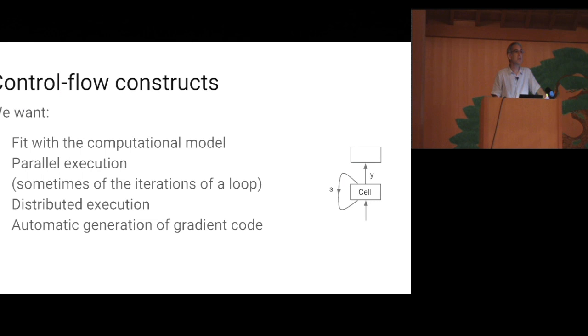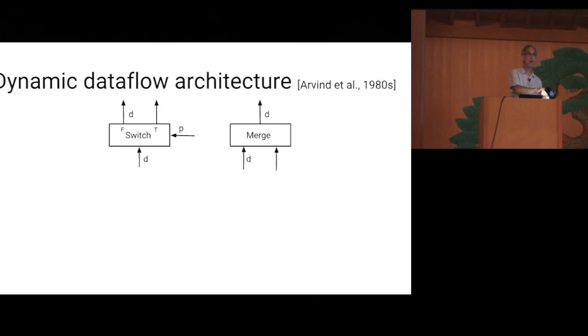So, we wanted to have an approach to incorporating loops and conditionals that fit well in the Dataflow model, that enable parallel execution and distributed execution, sometimes of different iterations of the same loop. And we also wanted to have the automatic generation of gradient code, just like for models that don't use the control flow constructs. And for this, we followed an approach that dates back to mid-80s, to the work of Arvind and his colleague, on something that they called dynamic Dataflow architectures. They add special operations to Graph that enable them to do conditionals and control flow. As you will see, we could base quite a lot of our work on theirs, though we had to add some extra bells and whistles, and some non-trivial technical development, for example, to do with gradient code, which was not a concern for them.